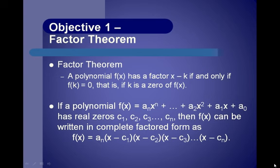If a polynomial function has real zeros c1, c2, c3, and so on, then the function f of x can be written in complete factored form as f of x equals a sub n times x minus c1 times x minus c2 times x minus c3, all the way up to x minus c sub n.